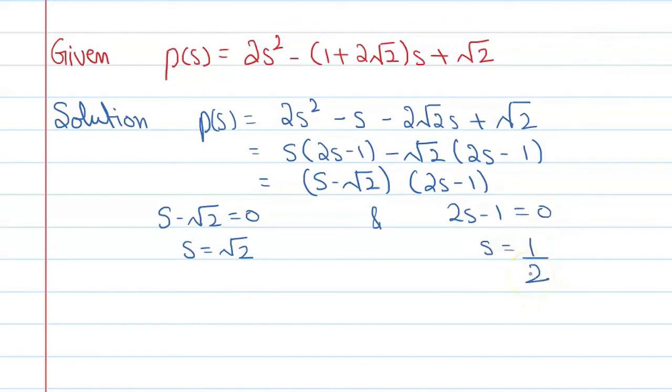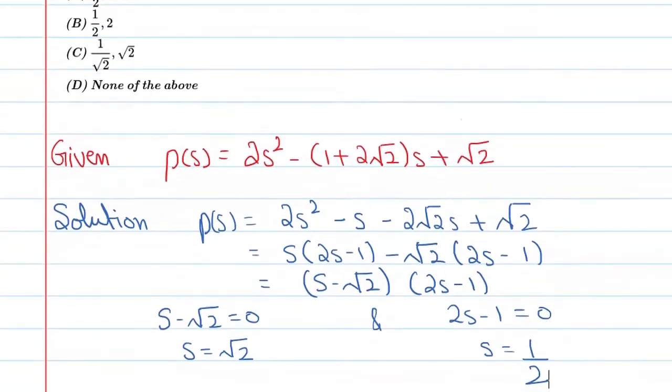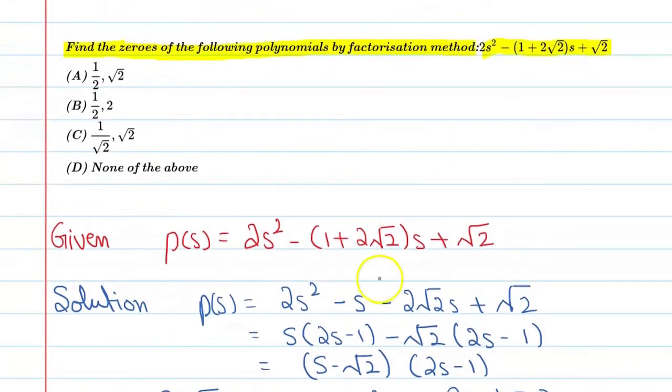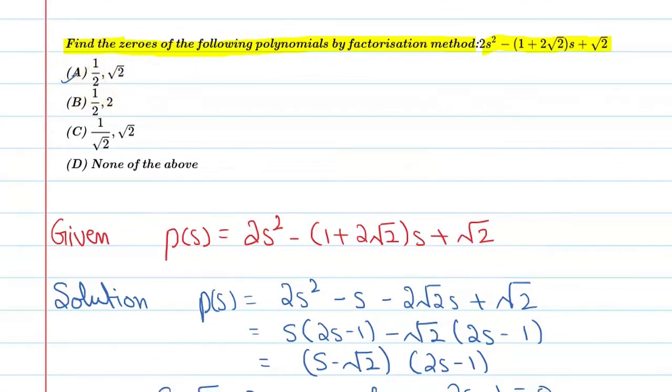So from here we got two zeros: s = 1/2 and s = √2. Let's see in which option these values are available. We can see that in the first option: 1/2 and √2. So from here we can take our final answer.